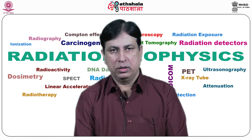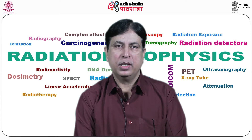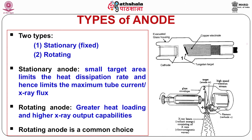There are two types of anodes used in medical diagnostic X-ray tubes: stationary (fixed) and rotating anodes. The simplest type has a stationary anode which consists of a tungsten insert embedded in a copper block. The copper block mechanically supports the tungsten target and removes heat efficiently due to its higher heat conductivity. However, the small target area limits the heat dissipation rate and hence limits the maximum tube current and X-ray flux. Stationary anode X-ray tubes are used in dental X-ray units, portable X-ray machines, and portable fluoroscopy systems.